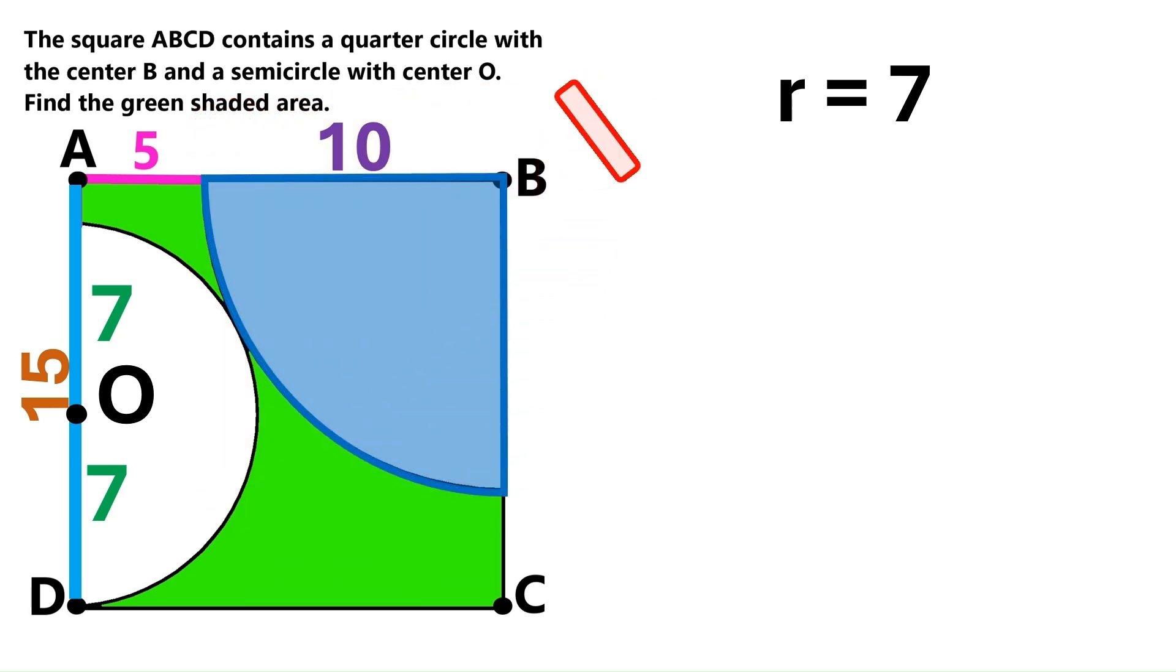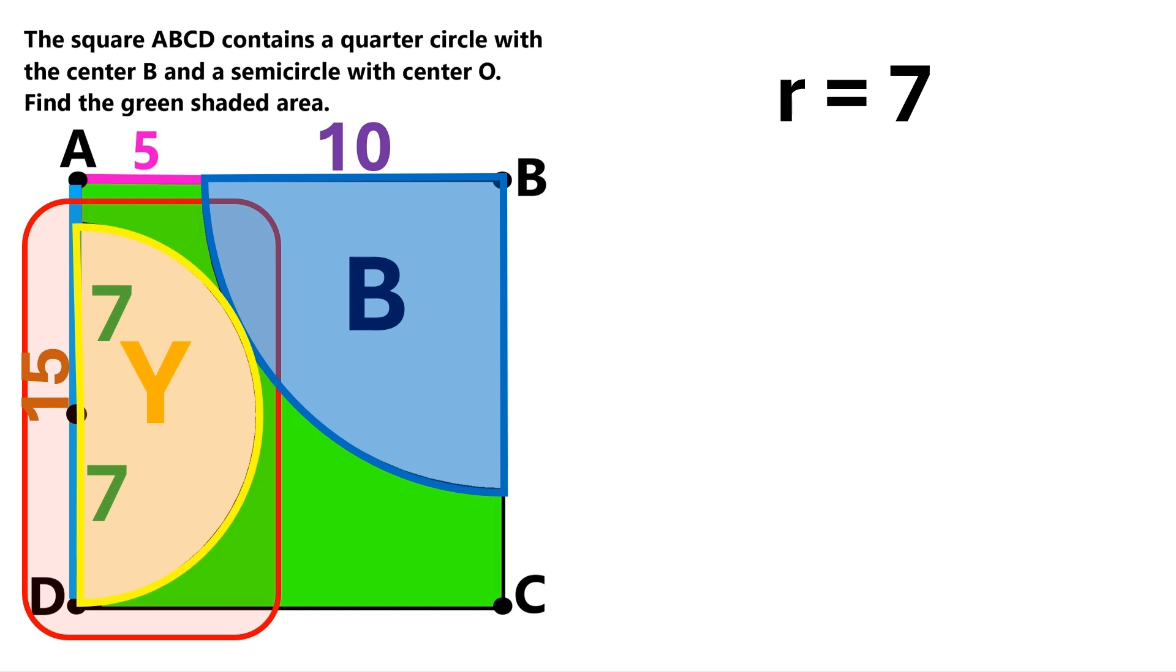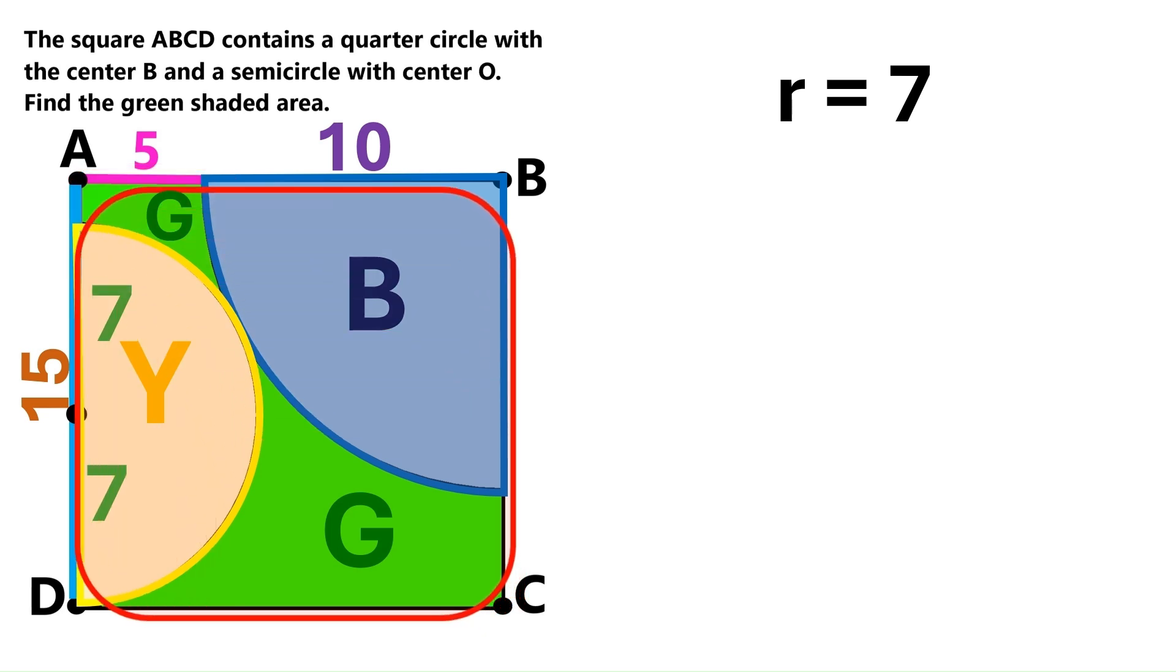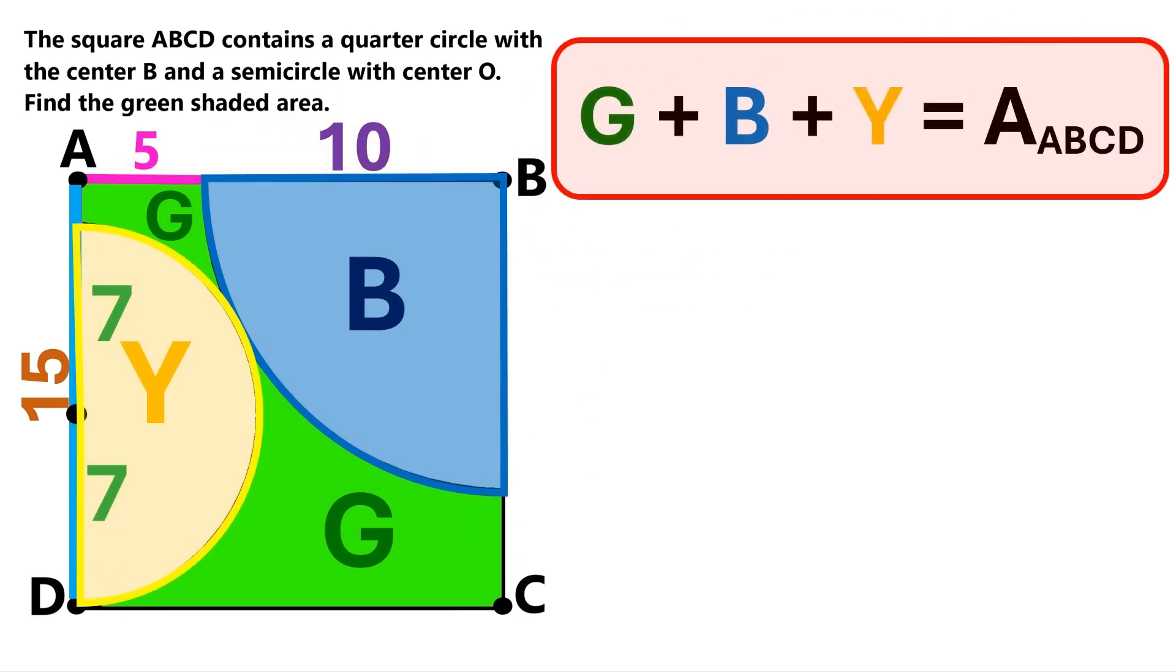Now, let's divide this entire shape into 3 regions. Let's name this quarter circle region B, because it's blue. And let's name this semicircle region Y, because it's yellow. And let's name this whole green region region G, because… yes, you guessed right, it's green. These 3 regions add up to the area of this entire square. Here we express that as an equation.